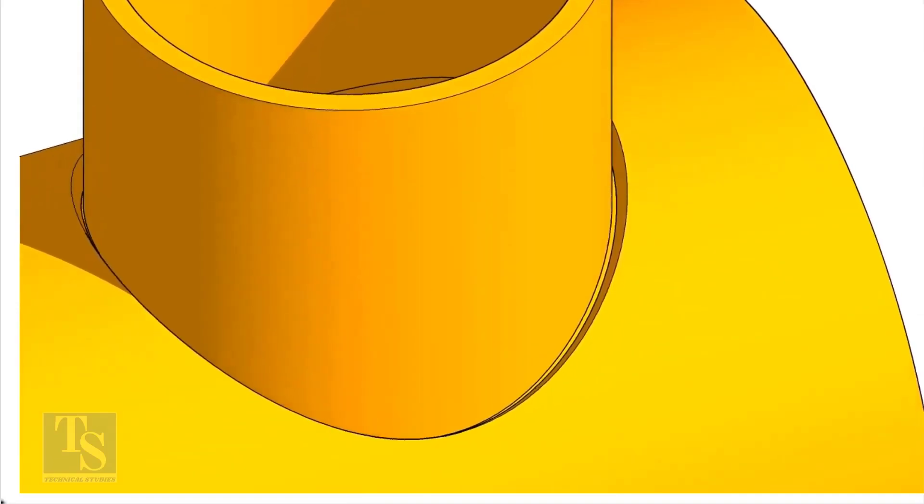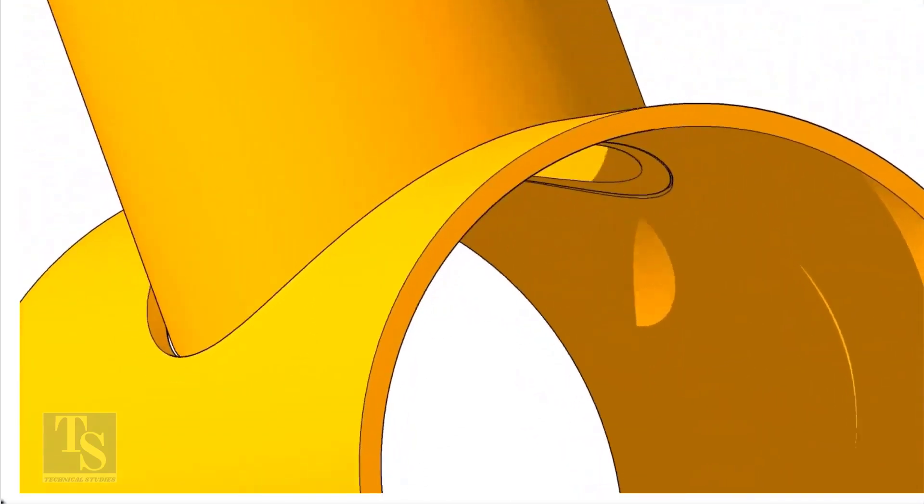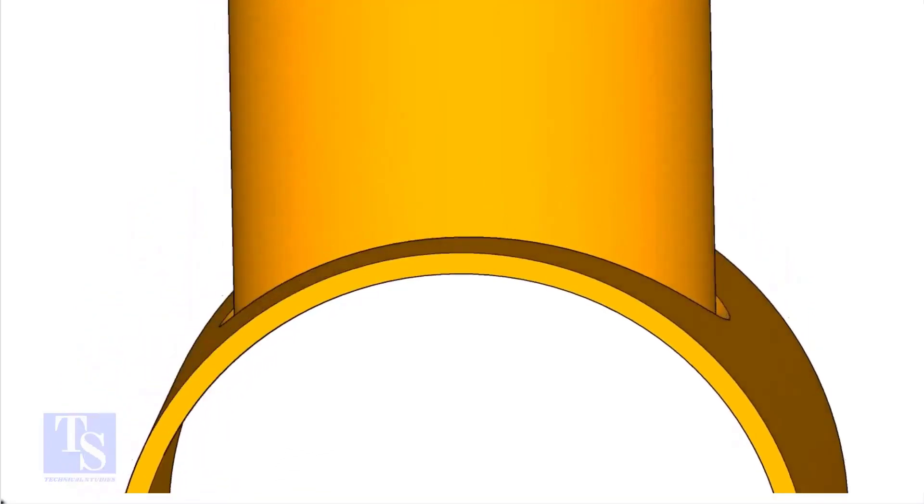On the branch pipe, there is no bevel preparation, but the cut-back cut is done. The end of the branch is level with the inside diameter of the header pipe.